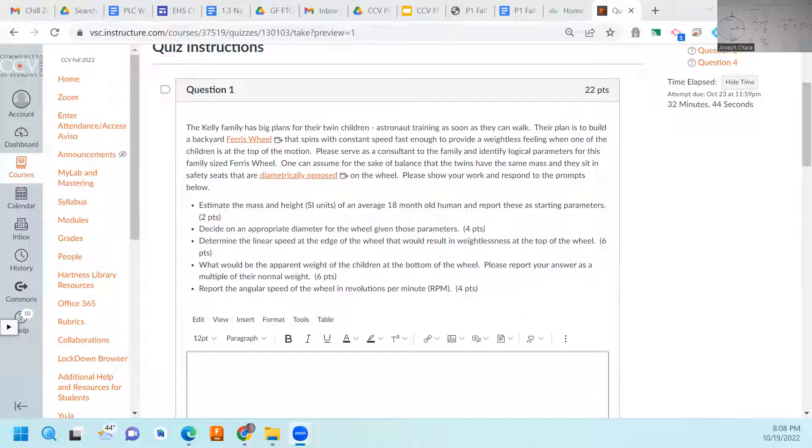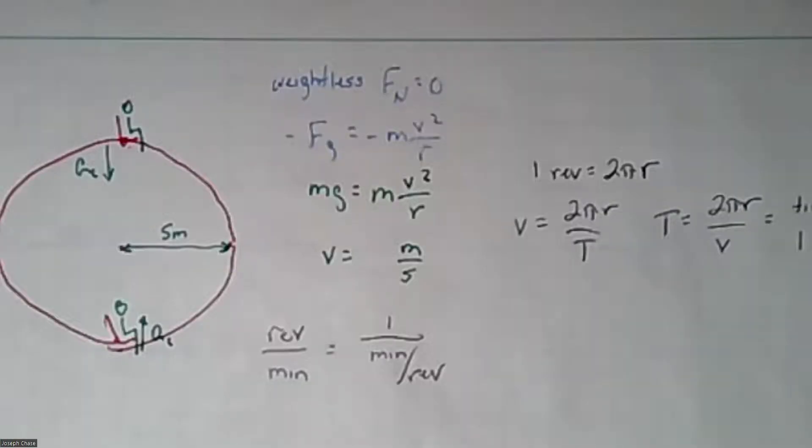All right, so for starters, you want to assume mass and height for the children. Determine appropriate diameter, find linear speed, what would the apparent weight of the children be at the bottom, because they wouldn't weigh the same, it would be heavier. And then report the angular speed of the wheel in revolutions. So I'm going to stop sharing and take a look at a diagram to help understand what's happening.